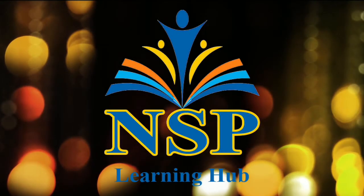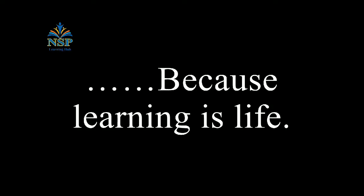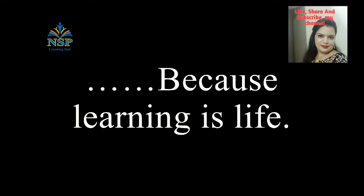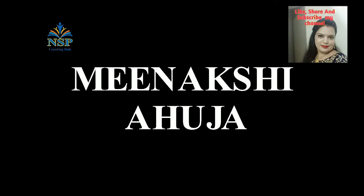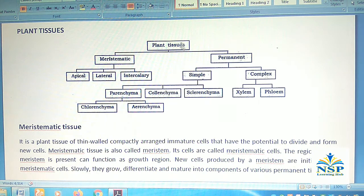Welcome to my channel NSP Learning Hub, because learning is life. Hello friends, today we study about plant tissues. Plant tissues are of two types: meristematic tissues and permanent tissues.